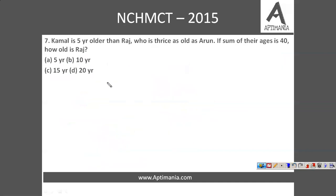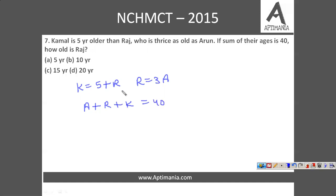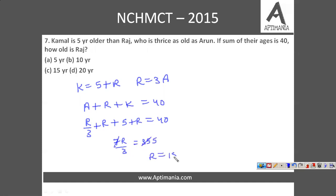Question number 7: Kamal is 5 years older than Raj, and Raj is thrice as old as Arun. If the sum of their ages (Arun + Raj + Kamal) is 40 years, we need to find the age of Raj. Substituting A = R/3 and K = R + 5 into the sum gives R/3 + R + R + 5 = 40, which simplifies to 7R/3 = 35, so R = 15 years.